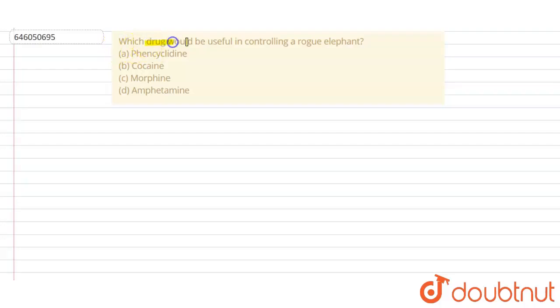Hello students, let's read the question. Which drug would be useful in controlling a rogue elephant? So basically, which of the following drugs is used to control a rogue elephant? Option A: Phencyclidine, option B: Cocaine, option C: Morphine, option D: Amphetamine.